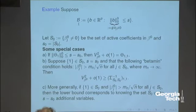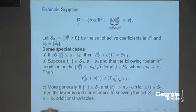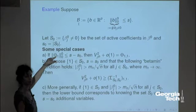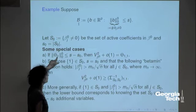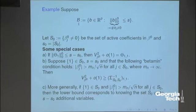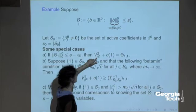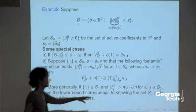Now let's look at an example. Suppose the model is that the underlying parameter is sparse — the number of non-zero coefficients is less than some value S. Let S_0 be the active set with size S_0 smaller than S. If you have sparsity of the precision matrix — meaning these projection coefficients are sparse and most are zero — then this direction stays within the model class, and so you have efficiency. The efficient variance is theta_{11}.